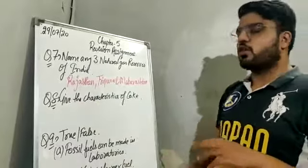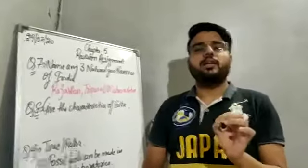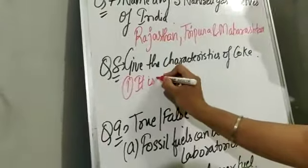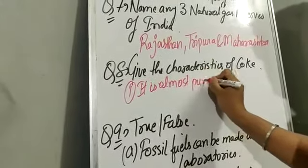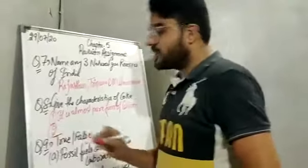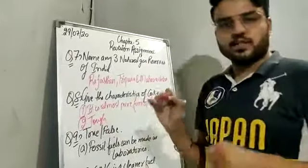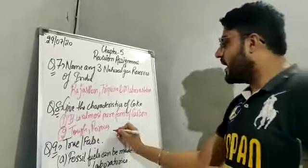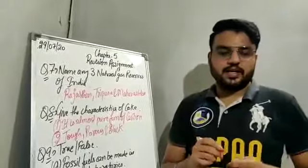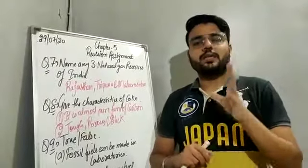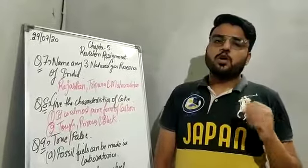Question number eight: give the characteristics of coke. Coke is an almost pure form of carbon — it has the maximum carbon content as compared to coal tar and coal gas. Its other properties: it is tough, it is a strong substance, it is porous (meaning it has pores on its surface), and it is a black colored substance.